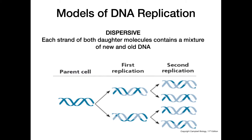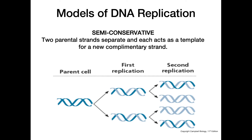To emphasize that again: what actually takes place in our cells is the semi-conservative model, where the two strands separate and each strand acts as a template for a new complementary strand to be made. Every DNA molecule is going to consist of one new and one old DNA strand.